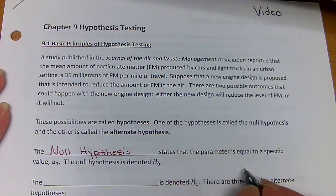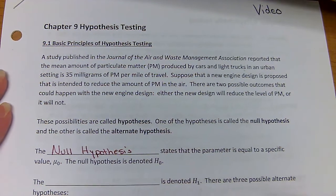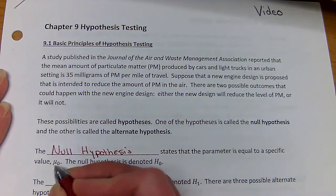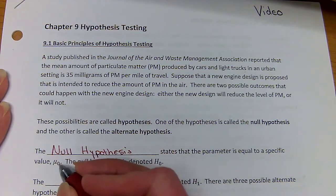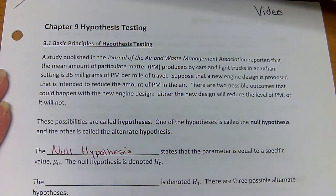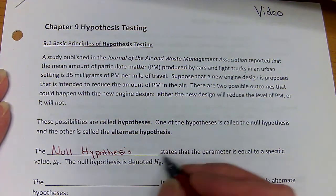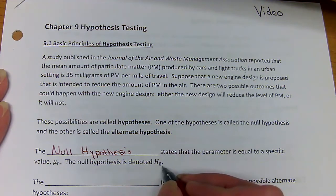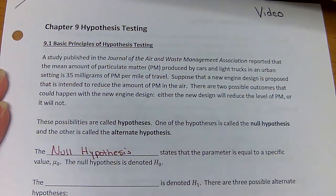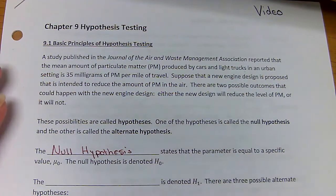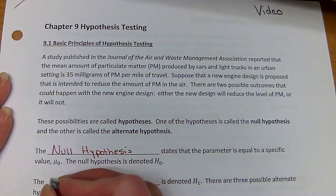The null hypothesis states that the parameter is equal to a specific value. We usually call that mu-zero — the null mean, the null value — and we represent it with H₀. Null usually means nothing, no change.